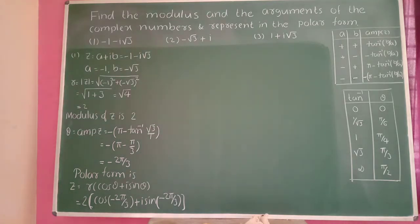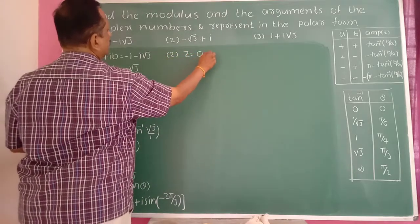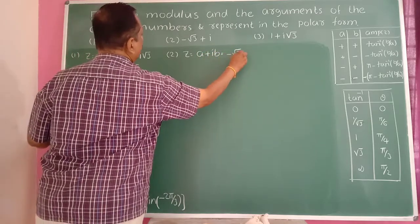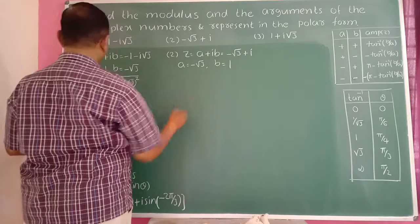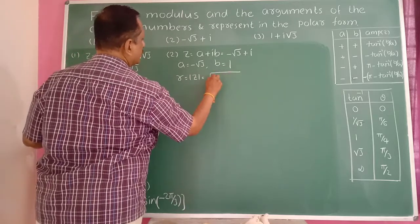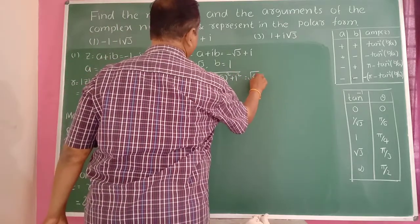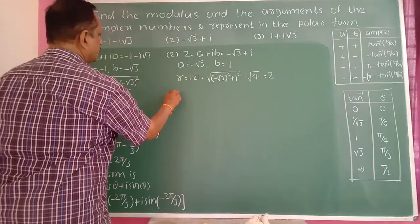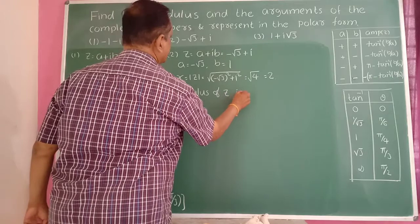Similarly, the second example is z equals minus √3 plus i. Therefore z equals a plus ib equals minus √3 plus i, so a equals minus √3 and b equals 1. So r equals modulus of z equals root of (minus √3)² plus 1², which is root of 3 plus 1, that is root of 4, so the modulus of z is 2.